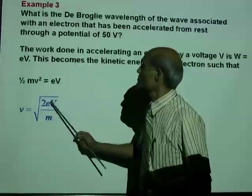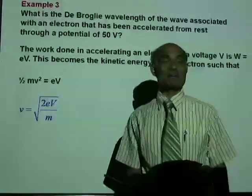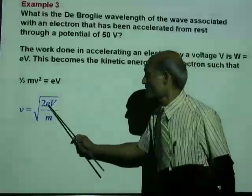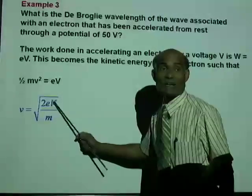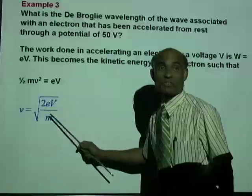And we can solve for the velocity of the electron from there. That will be V equal to 2EV divided by M. We know all these values.